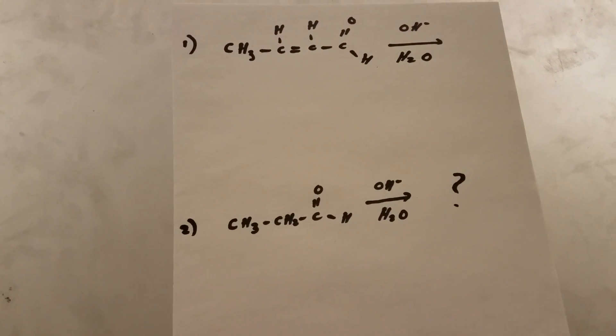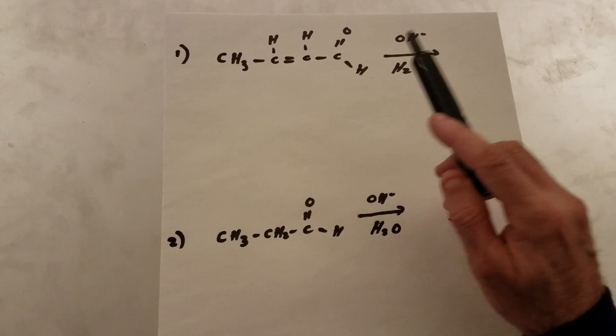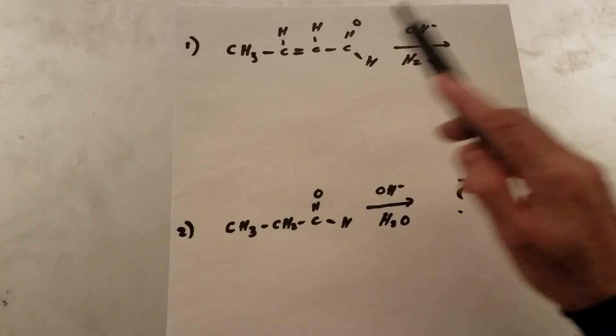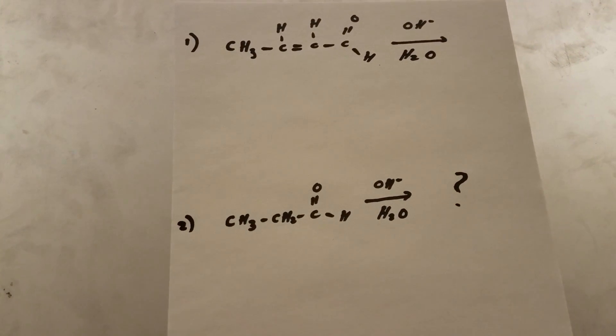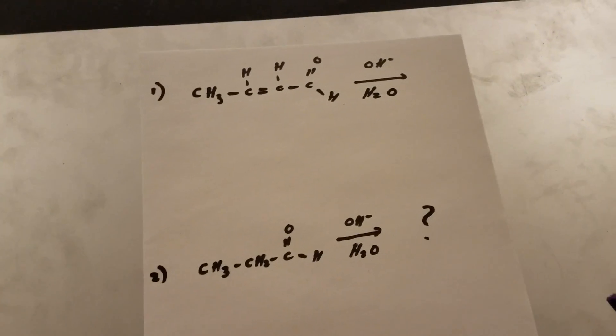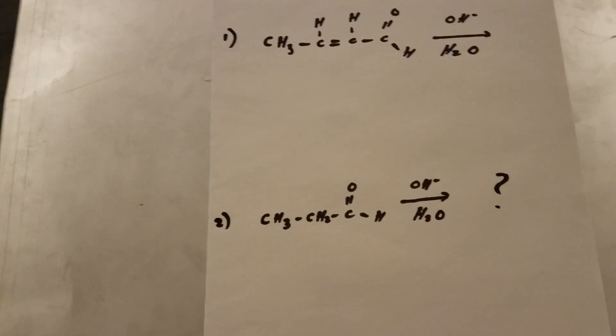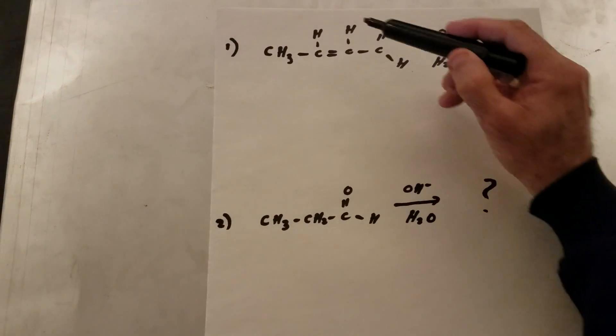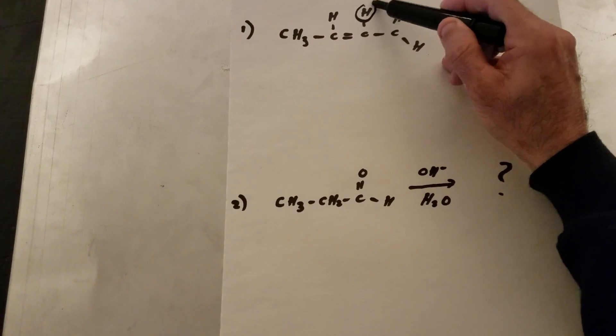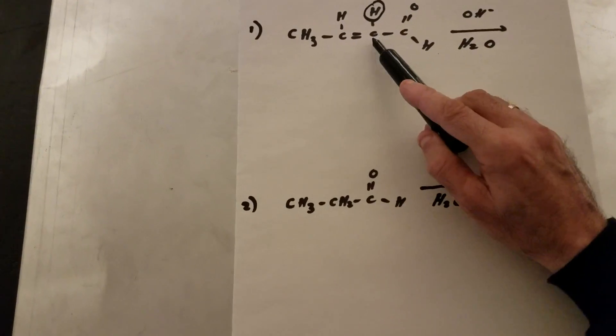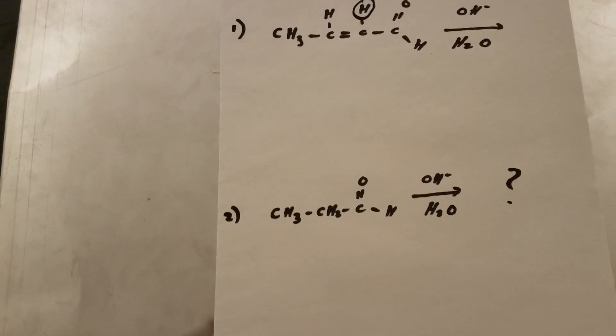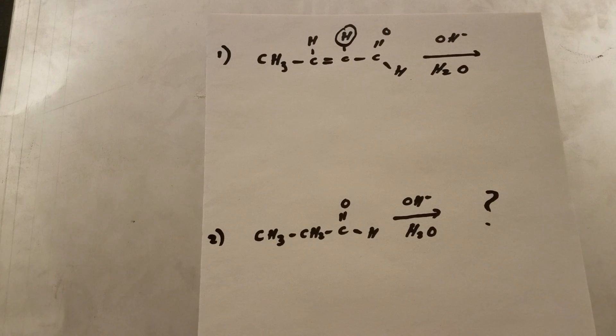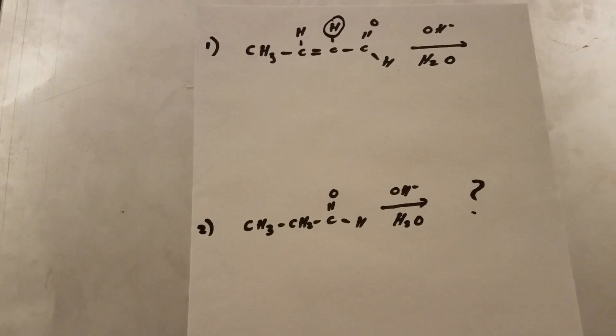When you do an aldol reaction, here you have an aldehyde and there's an alpha hydrogen and you're in dilute base. The first thing we're going to do is we're going to remove off a hydrogen from the alpha carbon. However, if you look here, this alpha hydrogen is on an sp2 carbon, which means it's not acidic.